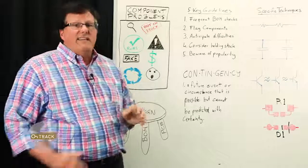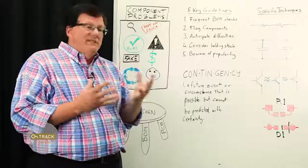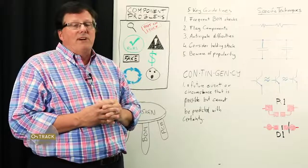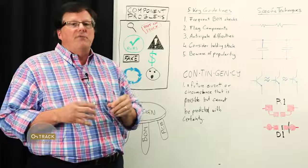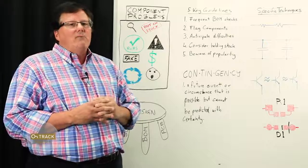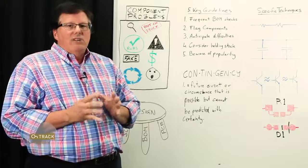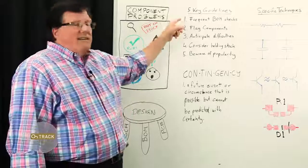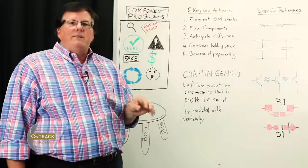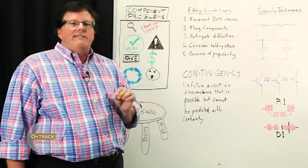So let's talk about some guidelines that you can use to mitigate some of these issues. Frequent BOM checks. Like I said, BOMs typically, you decide on your components early in the process, you work through that, you get your prototypes, and a lot of times it's not really looked at till closer to the end of the process. Recommend that you check that BOM early and often throughout the design process.